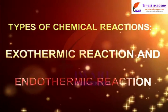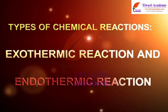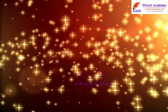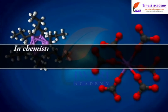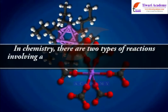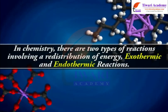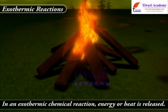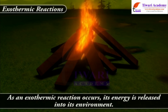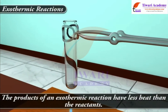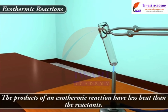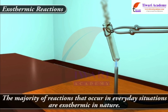Types of chemical reactions — Exothermic reactions. In chemistry, there are two types of reactions involving a redistribution of energy: exothermic and endothermic reactions. In an exothermic chemical reaction, energy or heat is released into the environment. The products of an exothermic reaction have less heat than the reactants. The majority of reactions that occur in everyday situations are exothermic in nature.